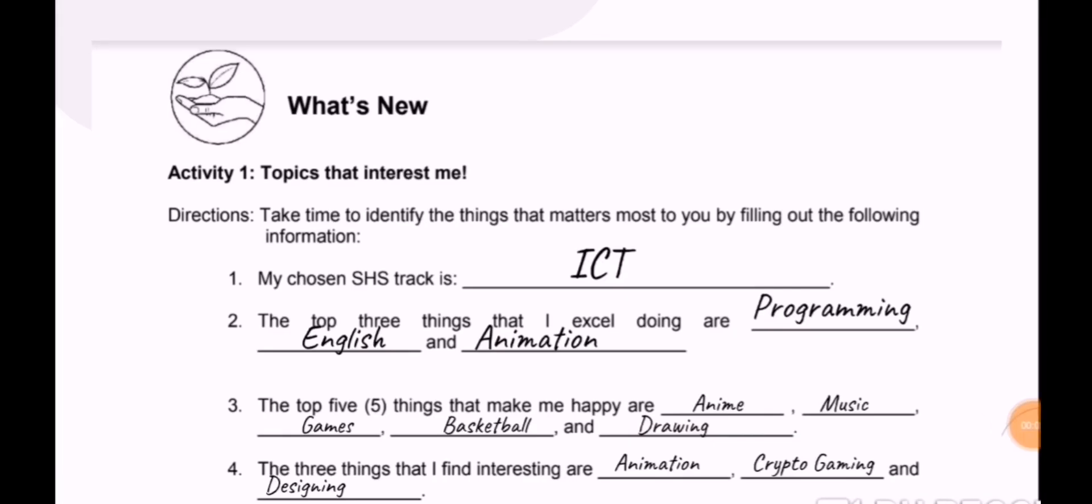Right now we have a pre-filled form. This is just an example. Let's say your chosen track is ICT—it could be anything. I might be speaking to HUMSS, ABM, STEM students, and so on. The top three things I excel at doing could be programming, English, and animation.